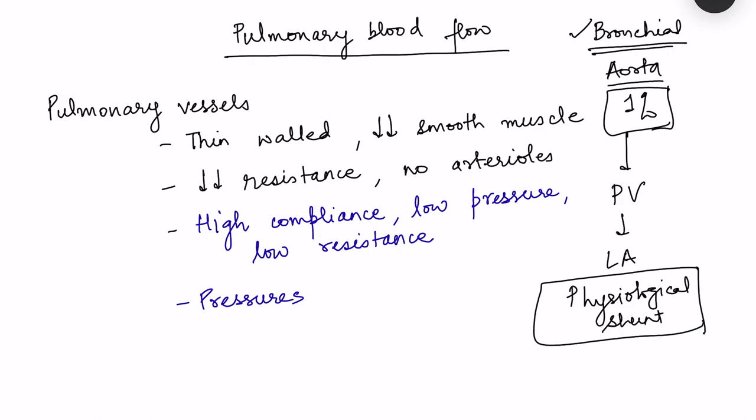Since these bronchial vessels arise from the aorta and are responsible for the metabolic requirements of the lungs, they have characteristics similar to systemic arteries. When we talk about pulmonary blood flow, pulmonary vessels are very different from systemic vessels, and this pulmonary blood flow is basically for the oxygenation of the entire blood.